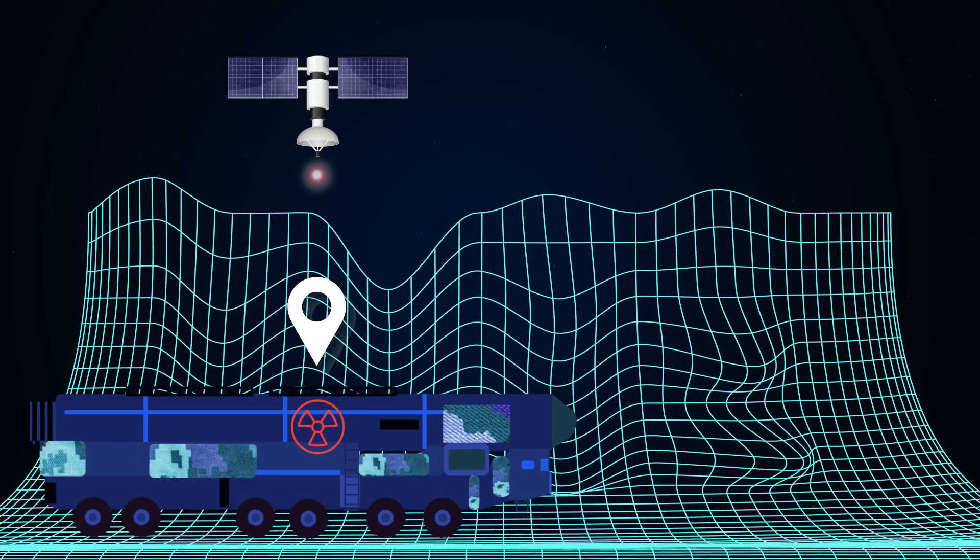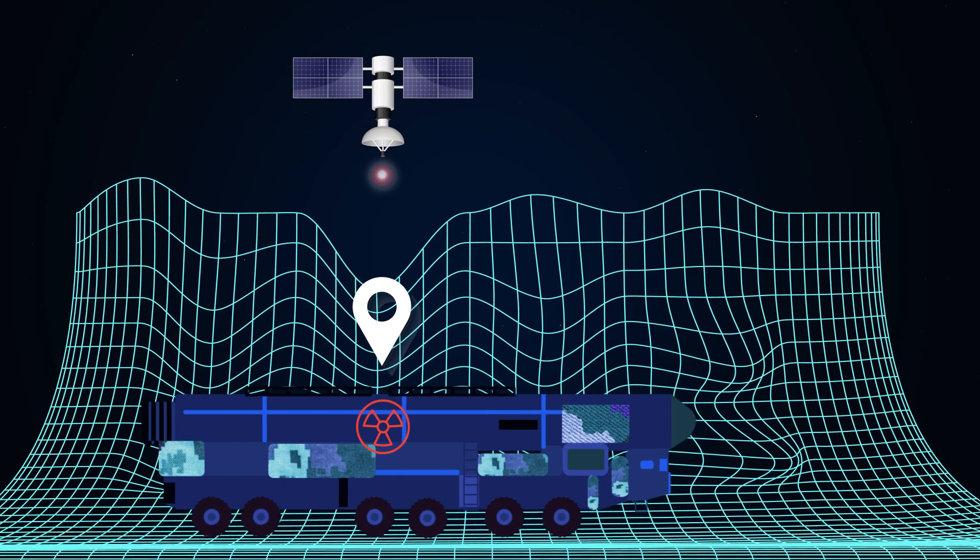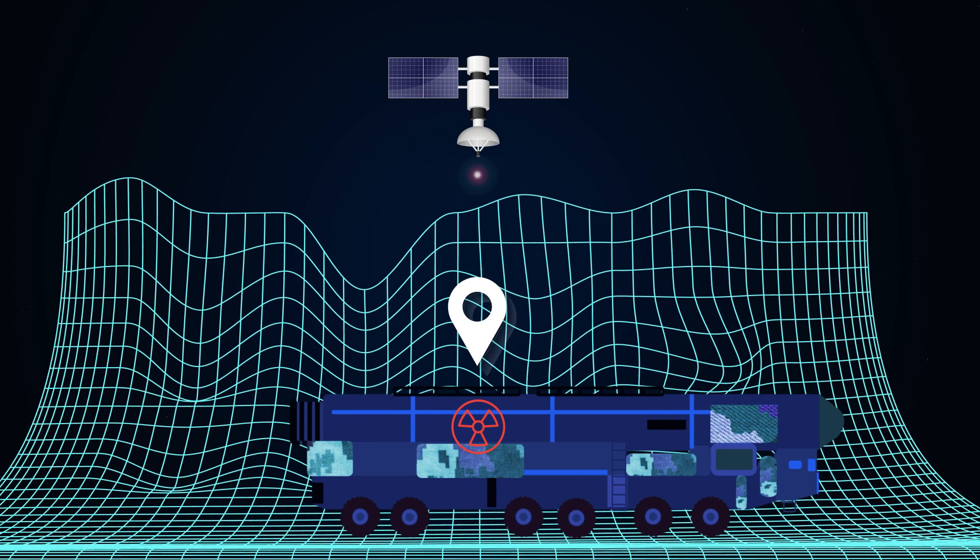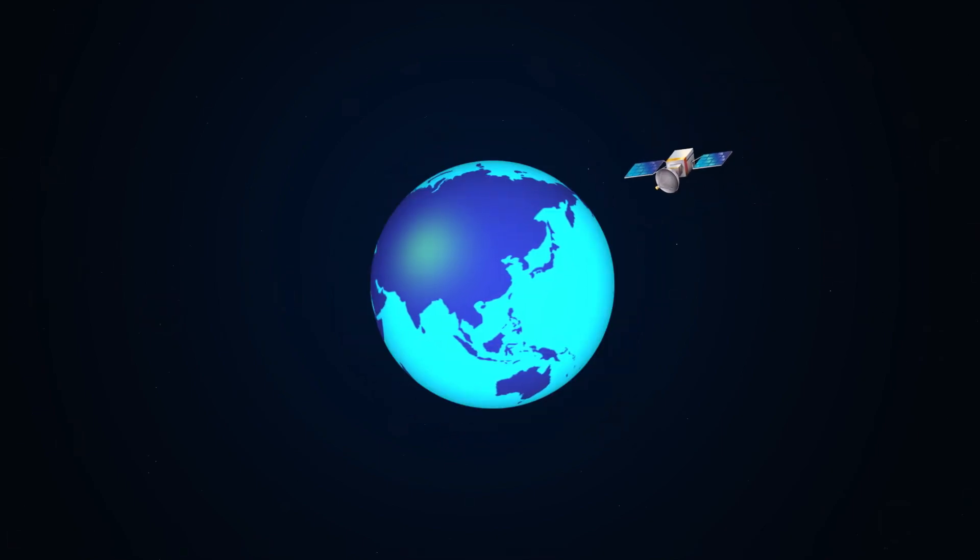To track a launcher, the seeker always needs to have at least one satellite covering the launcher. Any time there is a hole in the seeker's coverage, the seeker's certainty of the location of a launcher will drain away.